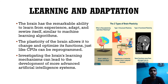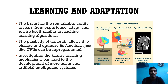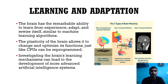Learning and adaptation: the brain has a remarkable ability to learn from experience, adapt, and rewire itself, similar to machine learning algorithms. The plasticity of the brain allows it to change and optimize its functions, just like CPUs can be reprogrammed. Investigating the brain's learning mechanisms can lead to the development of more advanced artificial intelligence systems.